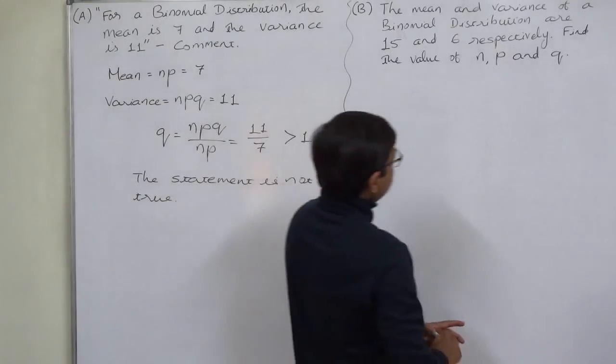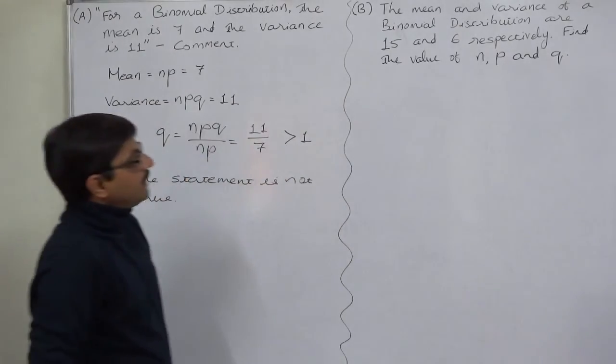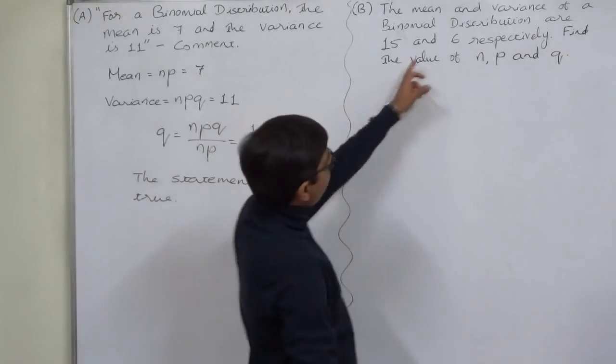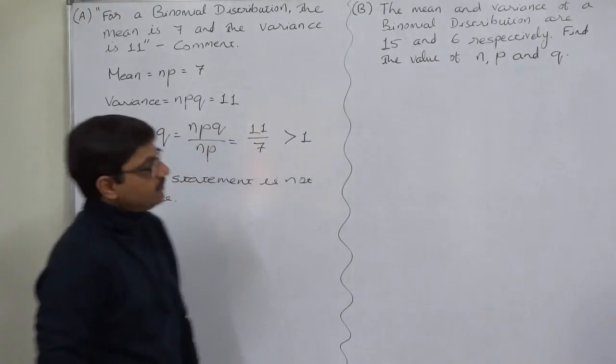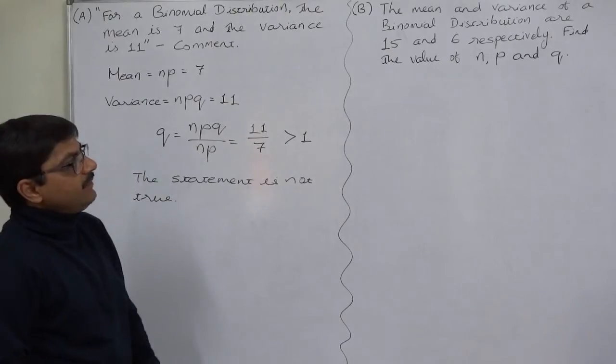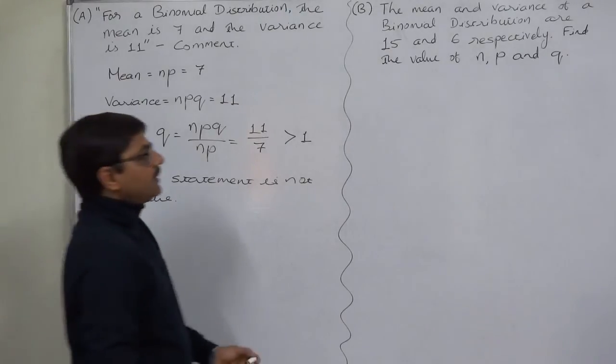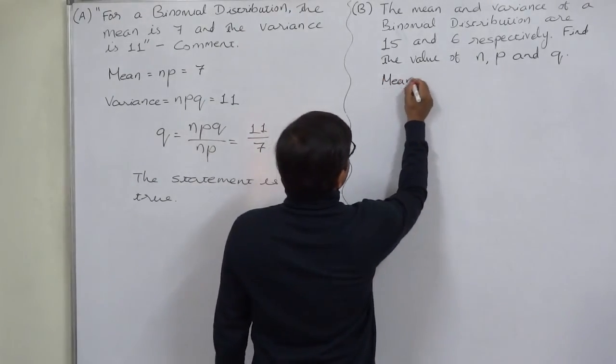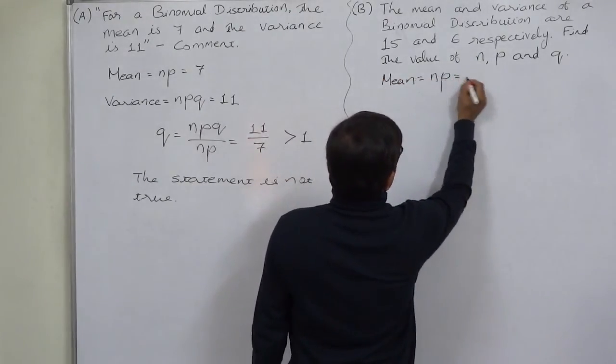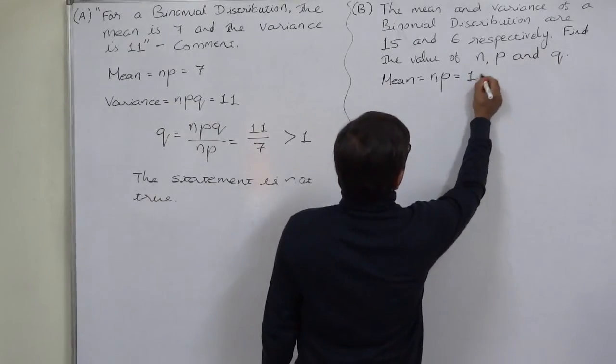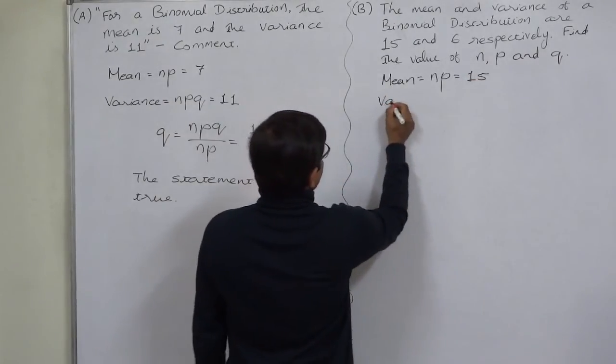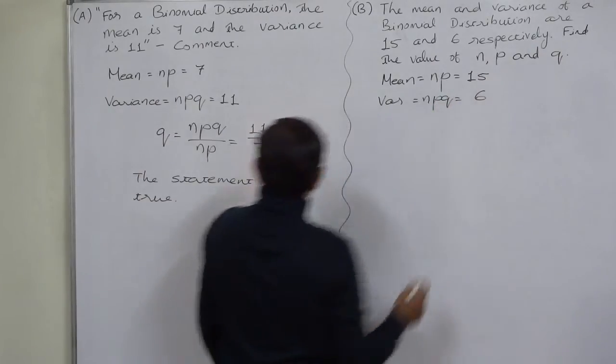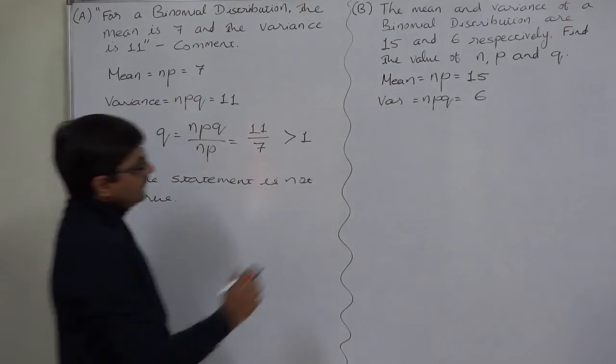Now another case is: the mean and variance of a binomial distribution are 15 and 6 respectively. Find the value of N, P, and Q. Now we know that for a binomial distribution, mean equals NP and that is given to be 15, and variance equals NPQ, that is given to be 6. Like the previous case, first we can find Q.